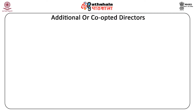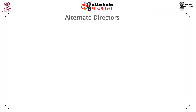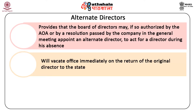Casual or ad hoc directors: Section 161, Subsection 4 provides that a casual vacancy occurring amongst the directors on account of death, resignation, or otherwise may be filled up by the board of directors unless the articles provide a different procedure. The person so appointed shall hold office only up to the time his predecessor would have continued. Alternate directors: Section 161, Subsection 2 provides that the board of directors may, if so authorized by the articles of association or by a resolution passed by the company in the general meeting, appoint an alternate director to act for a director during his absence for a period of not less than three months from the state in which meetings of the board are ordinarily held. Such a director will vacate office immediately on the return of the original director to the state.